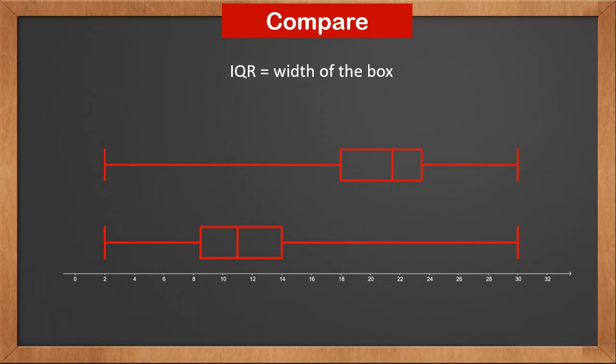Since the two sides of the box are the lower and upper quartile, IQR is the width of the box. We can see from the plots that the two datasets' IQRs are about the same too.